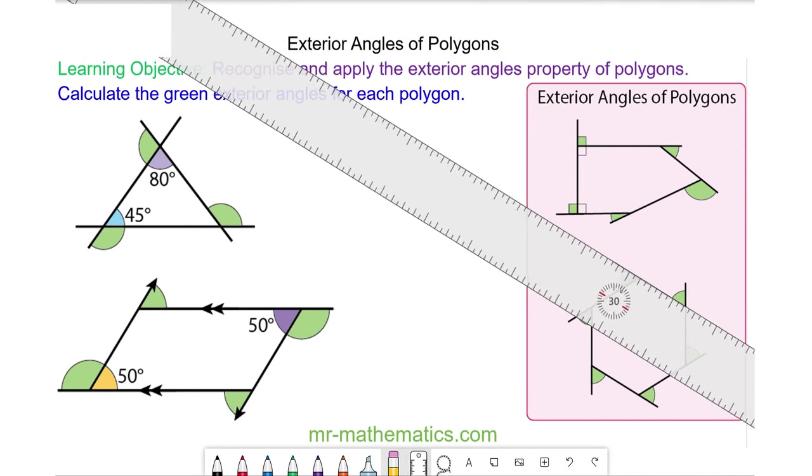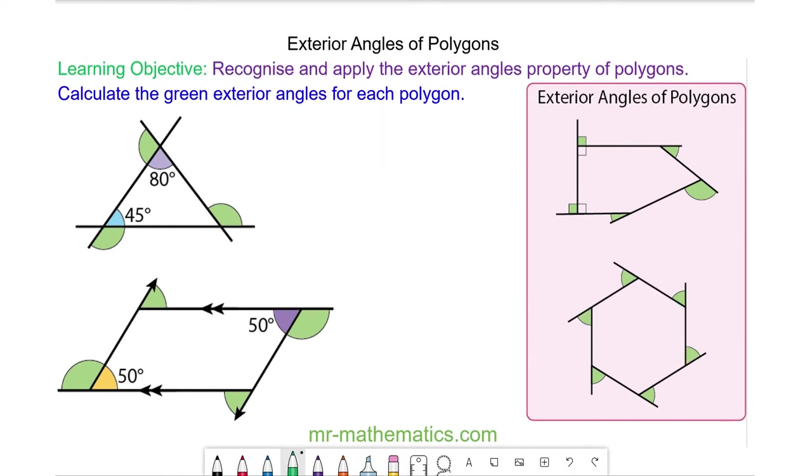So this means that the exterior angles of a polygon add up to the angles in a circle, which is 360 degrees. So all these green angles have a sum of 360 degrees.